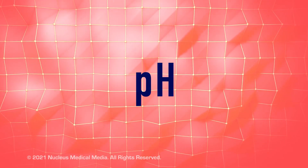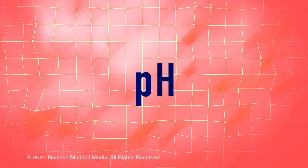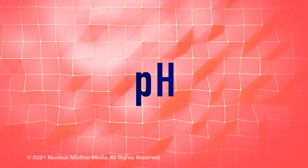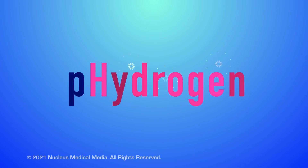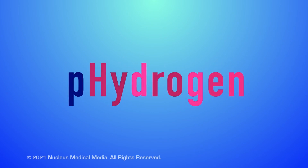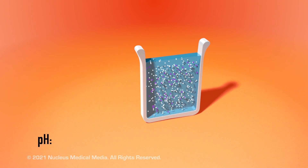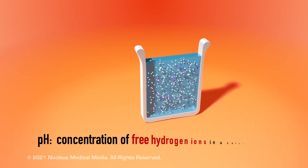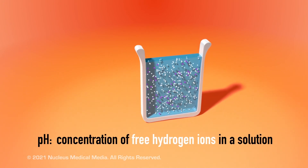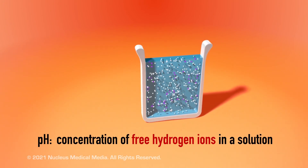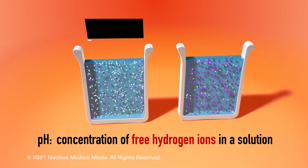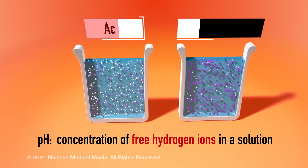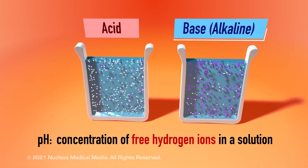Now that we've discussed acids and bases, let's talk about pH. The H in pH stands for hydrogen. pH is a measure of the concentration of free hydrogen ions in a solution. It tells us whether the solute in a solution is an acid or a base.